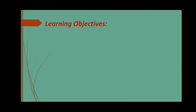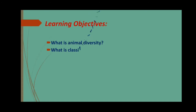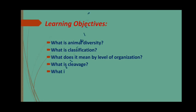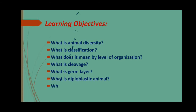Learning objectives. After completing today's class, students will be able to learn what is animal diversity, what is classification, what does it mean by level of organization, what is cleavage, what is germ layer, what is diploblastic animal and what is triploblastic animal.